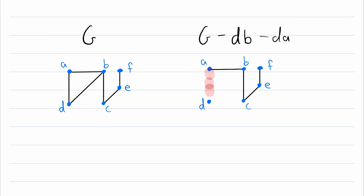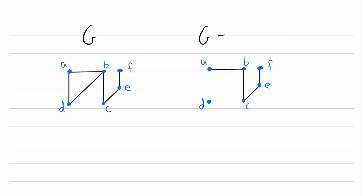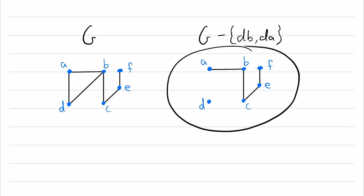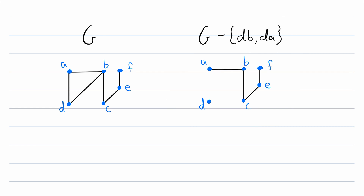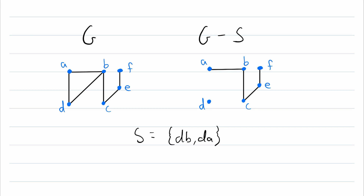Notice that we only delete the edge — we do not delete the incident vertices. There are a couple of other ways we could write this graph G minus DB minus DA. We could put the two edges we're deleting in a set, so this is graph G with edges DB and DA deleted. Or if we gave this set a name, say S, then we could simply write G minus S — it's just graph G with the edges in S removed from it.